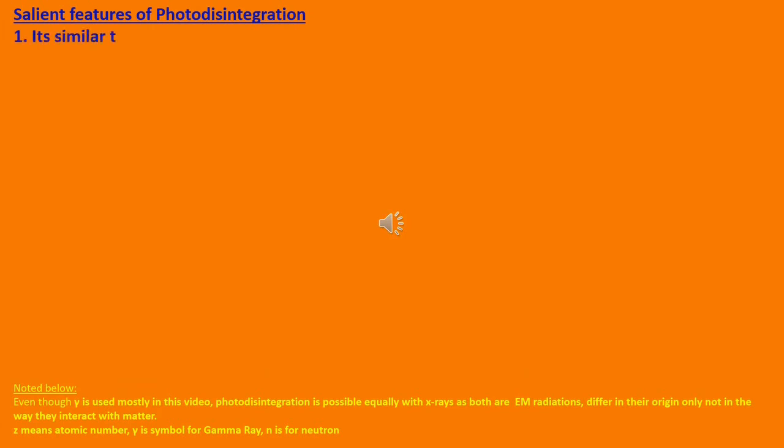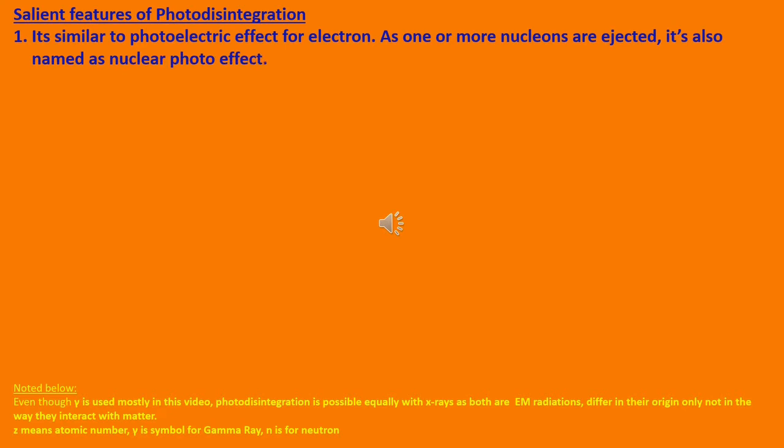It's similar to photoelectric effect for electron. As one or more nucleons are ejected, it's also named as nuclear photo effect. In photoelectric effect, photon is absorbed and electron is knocked out from atom. Similarly in case of photodisintegration, nucleons are knocked out by photons.